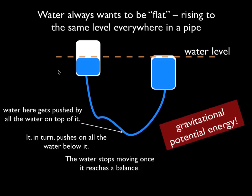The reason this works is because of something about water and gravity and the way they interact. If you've ever looked at a lake, you notice that the water in the lake is all at the same level, and that's because water always wants to be flat and it rises to the same level. This happens on a lake, but it also happens if you have a system of pipes that are interconnected.